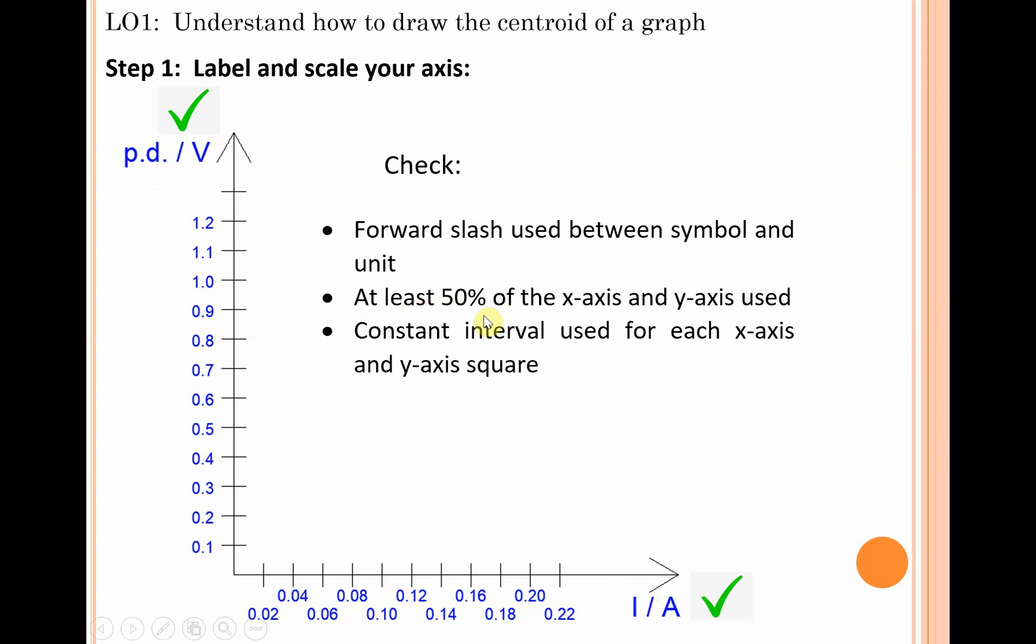Secondly, make sure you're using at least 50 percent of each axis. I recommend trying to get at least two-thirds if you can. If you check against your table of results, this graph should enable you to easily use at least 50% of the x-axis and 50% of the y-axis. The final check: make sure you have a constant interval. For example, each square interval here is 0.1, and every single interval on the x-axis is 0.02.